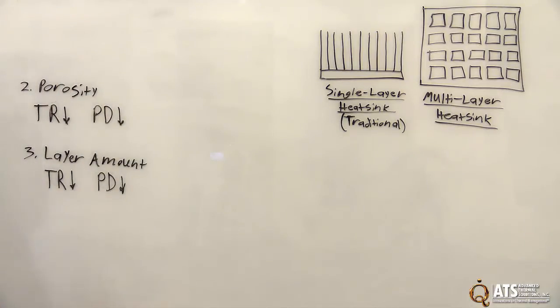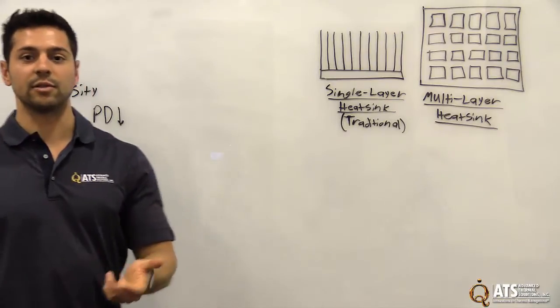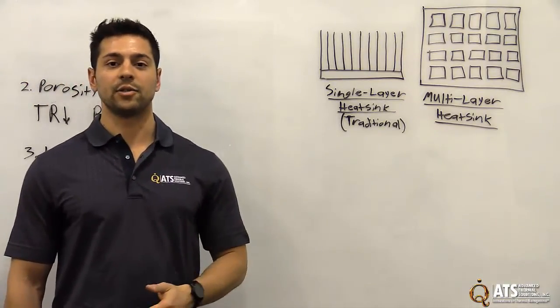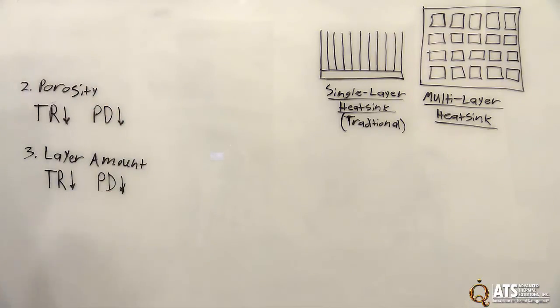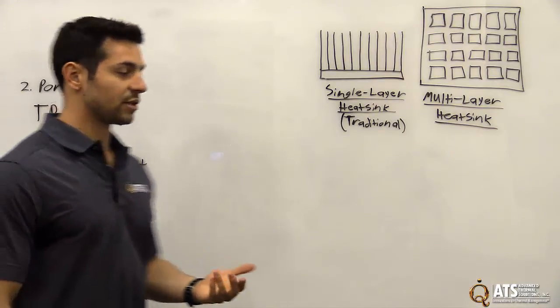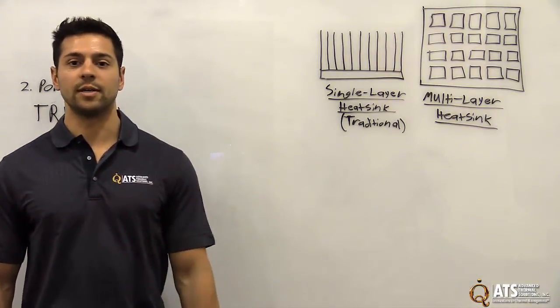So layer amount, the reason behind thermal resistance decreasing is simply because the amount of coolant channels increases, and this effectively increases surface area and thus heat transfer. And same goes for the pressure drop. The more coolant channels, the less restriction there is and the more free-flowing the heat sink is.